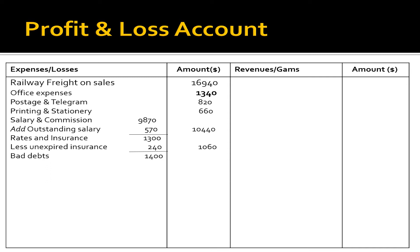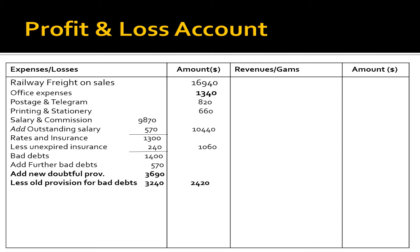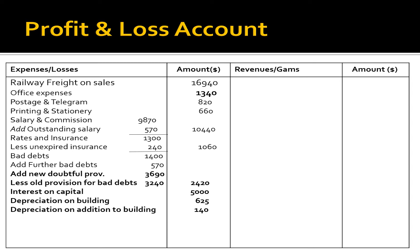For bad debts: existing bad debts $1,400, plus further bad debts $570, plus new doubtful debts provision $3,690, giving $5,660, less old provision for bad debts $3,240 — totalling $2,420. Other expenses: interest on capital $5,000; depreciation on building $625; depreciation on addition to building $140; depreciation on furniture $175.